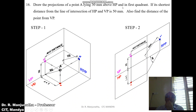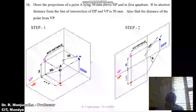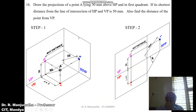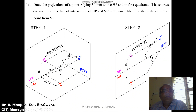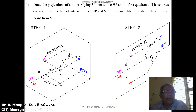Point A is lying 30 mm above HP and in the first quadrant, so obviously this should be the first quadrant. We have considered the right profile plane as the profile plane because the shortest distance from HP and VP is 50 mm. This is the vertical plane and this is the horizontal plane. The shortest distance can be viewed only from the left side view.